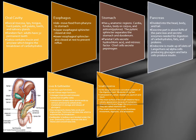The small intestine is the longest and most convoluted portion of the digestive tract, measuring about 16 to 19 feet. It is composed of three areas: the duodenum, the jejunum, and the ileum. The inner surface has a velvety appearance due to numerous finger-like projections called intestinal villi. The small intestine has three main functions: movement, digestion, and absorption.